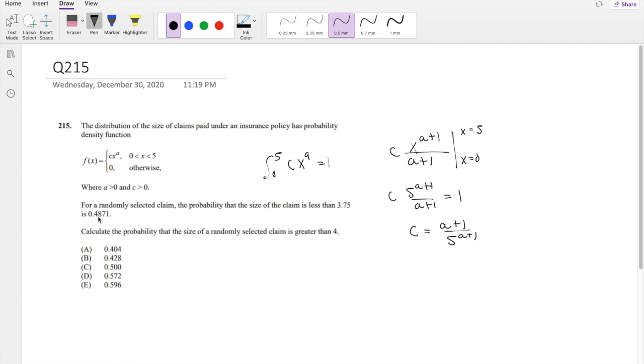All right, and they say for a randomly selected claim, the probability the size of the claim is less than 3.75. So 3.75 is the upper limit and 0 is the lower limit of the same function.